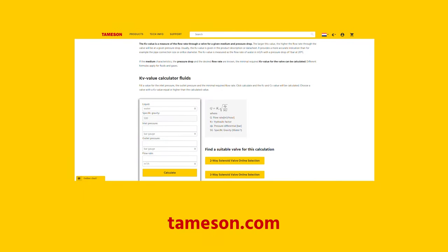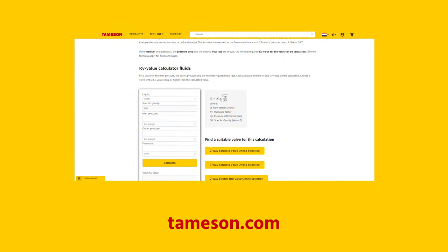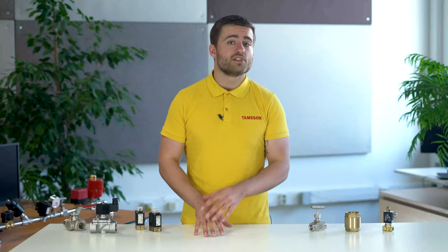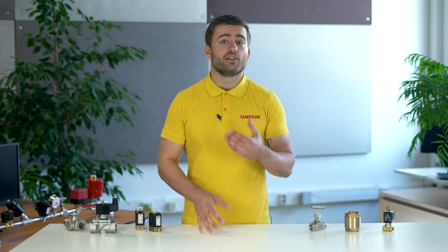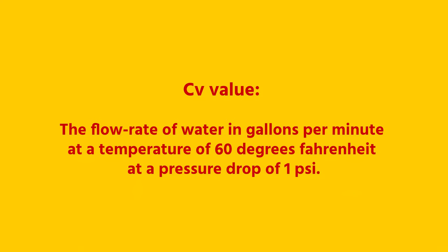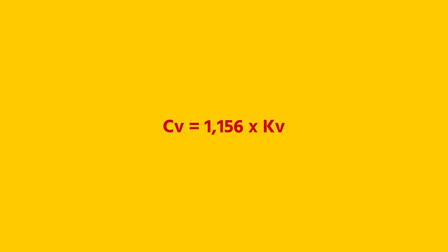You can calculate the KV value with our calculator on Thameson.com. Countries that use the imperial system use a slightly different value, the CV value. The CV value is defined as the flow rate of water in gallons per minute at a temperature of 60 degrees Fahrenheit and a pressure drop of 1 psi. The KV and CV values are related as follows: CV is approximately 1.15 times the KV.